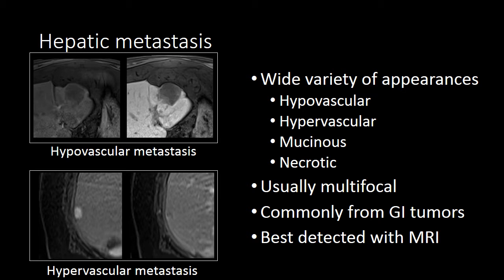Hepatic metastases will have a wide variety of appearances that are based on the primary tumor type. When a metastasis within the liver is described as hypovascular, that means it enhances less than the surrounding liver. If it's described as hypervascular, it means it enhances more than the surrounding liver on at least one of the phases of contrast.